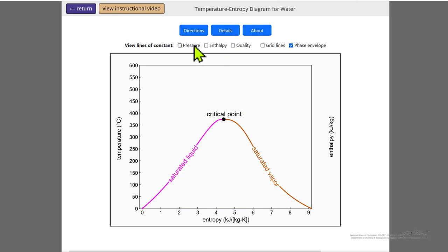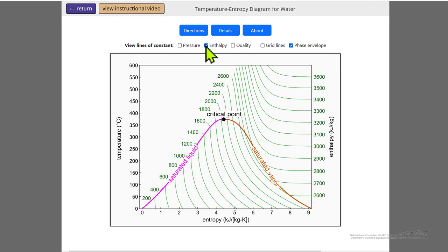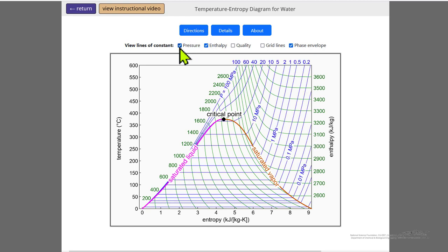Instead of pressure, we can look at enthalpy. This is more complicated but shows the relation between enthalpy and, for example, if we look at this 3100, it's almost constant temperature, but the entropy is increasing, and that's because if we look at the pressure, we're decreasing the pressure.